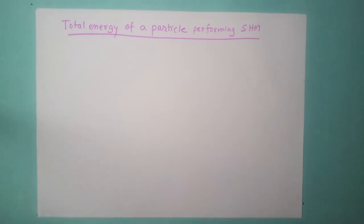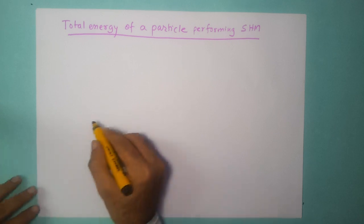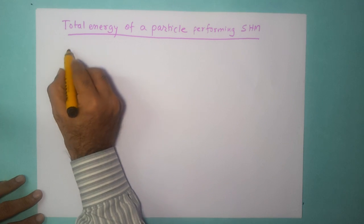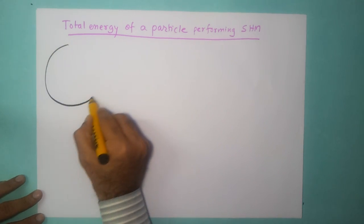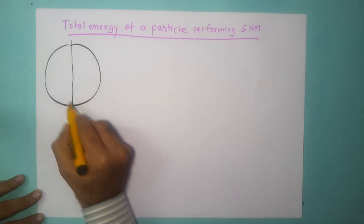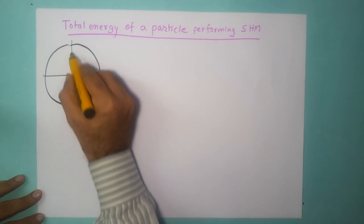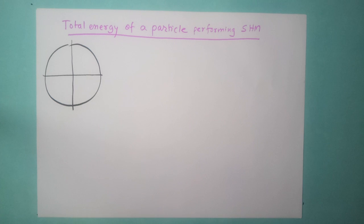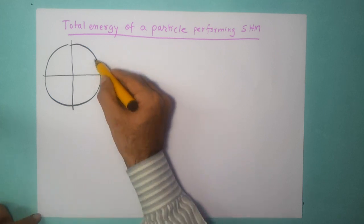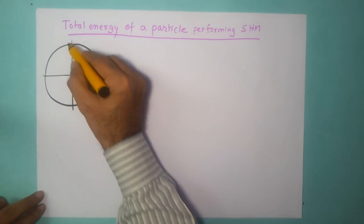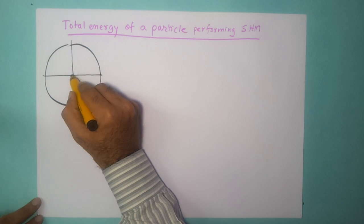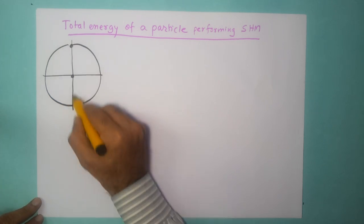We have looked at simple harmonic motion in quite detail and the next topic for discussion is the energy of the particle which is performing simple harmonic motion. We have that object performing uniform circular motion, but from here on we will not talk so much about the uniform circular motion but focus our attention on the simple harmonic motion.